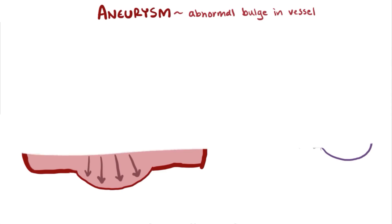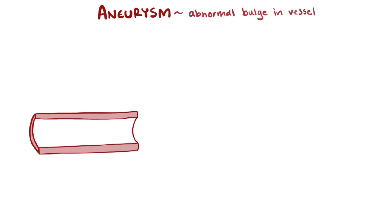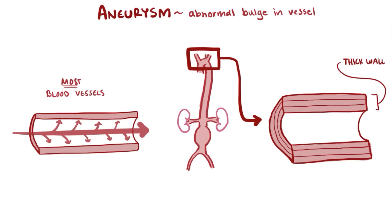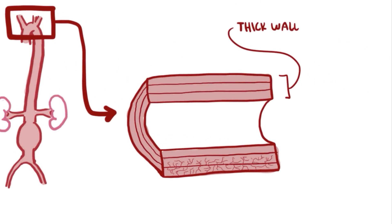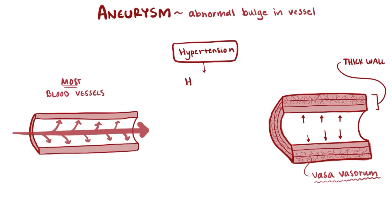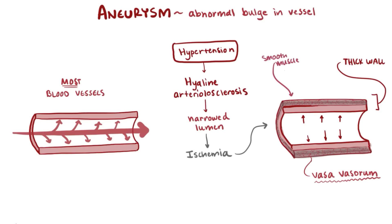So what underlying conditions might weaken the wall of blood vessels? One way is if the layers of the blood vessel walls don't receive oxygen. In the first section of the aorta, where the walls are super thick and muscular to handle all that blood pressure from the heart, they need their own set of blood vessels — called vasa vasorum — to supply the tunica media and tunica externa. In hypertension, the vasa vasorum can develop hyaline arteriolosclerosis, narrowing their lumen, causing ischemia to the aortic wall, and resulting in atrophy of the smooth muscle of the tunica media, which overall weakens the aorta's wall.